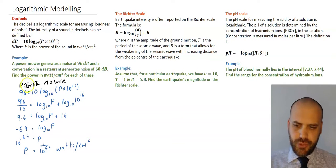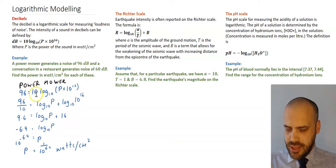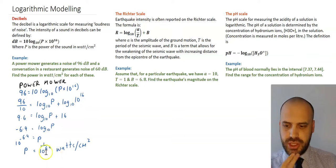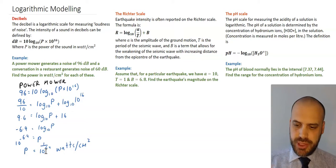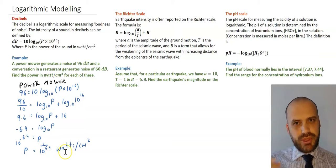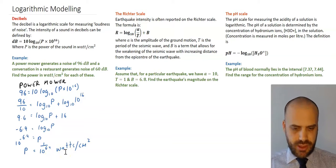There's my full working for the power mower. I've just subbed in 96, and then I've done some algebraic manipulation, and I get 1 over 10 to the 6.4. That's an incredibly small number, but it's watts per centimetre squared, so you would expect that.